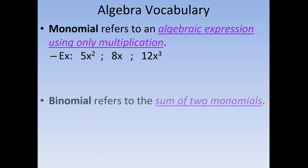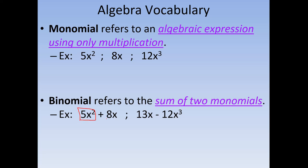Binomials are when we take two monomials — two expressions that only have multiplication — and we add or subtract them. So we say it's the sum of two monomials. For example, 5x squared plus 8x is a binomial because we have one algebraic expression here and one here — so one, two. Same thing with another example: one algebraic expression and two algebraic expressions.